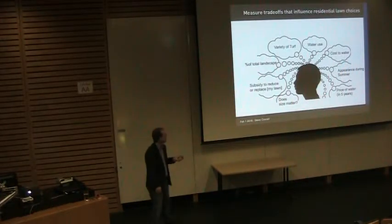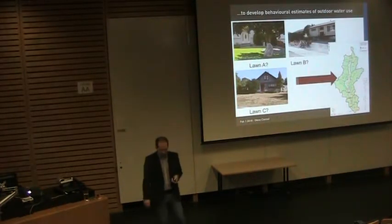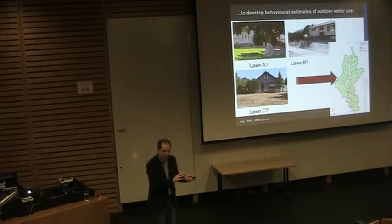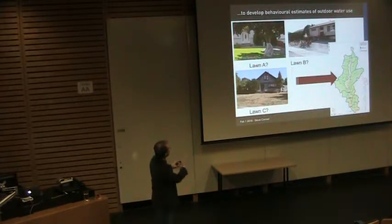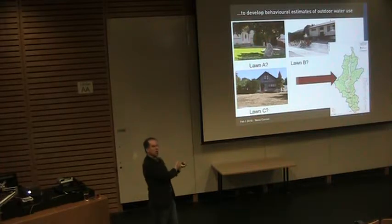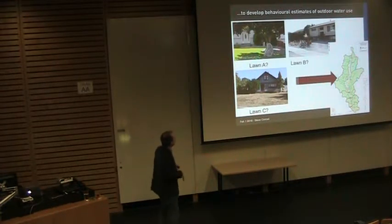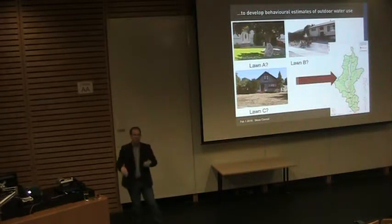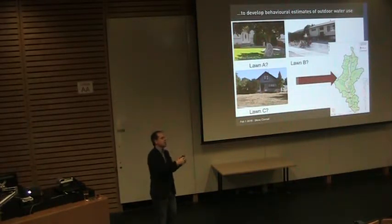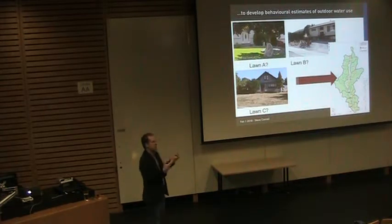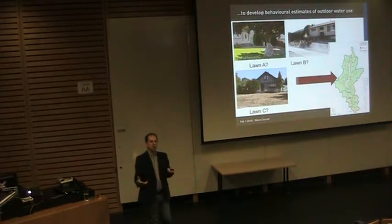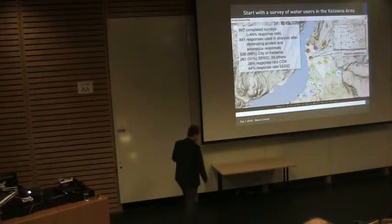We wanted to understand why residents made a particular choice to have a lawn that looked like Lawn A, B, or C. These lawns were all in the same neighborhood — I drove around taking photos — and the reason we wanted to understand those preferences is because each one of these lawns results in a different amount of water use, and that water use is important if we're trying to bring it into a hydrological model.